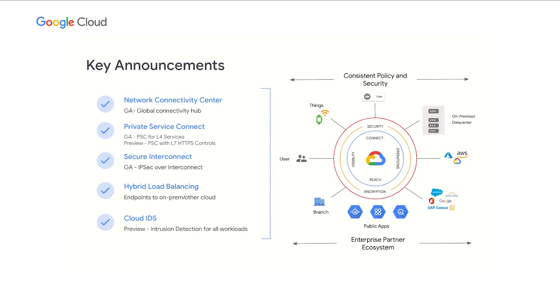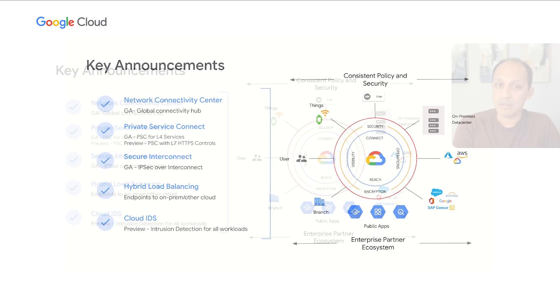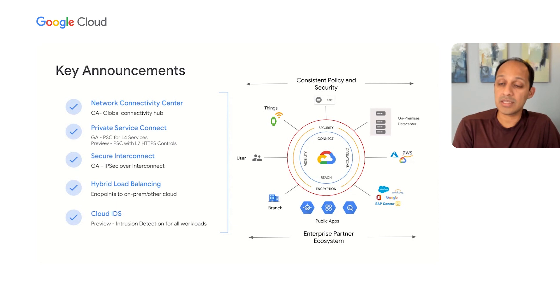Encryption is key to our customers — we are glad to announce that IPsec over interconnect is now available as GA in many regions. Hybrid load balancing, which offers endpoints in GCP as well as endpoints in on-prem and in other clouds, is also available now. We have been investing on the security front — one key new innovation is Cloud Intrusion Detection System, IDS. We are delivering Cloud IDS in partnership with Palo Alto, and this is now available in preview. We thank you very much for your time and hope that you can try some of these new innovations in GCP networking as we help you along on your cloud journey. Thank you.